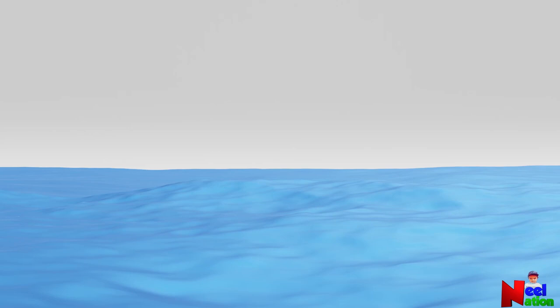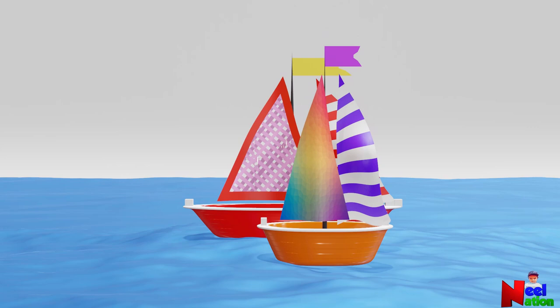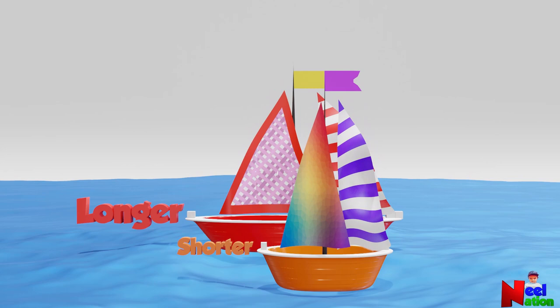Now, here you have two boats. A red boat and an orange boat. Which one is longer and which one is shorter? Red boat is longer. Orange boat is shorter. Yes, you are correct.